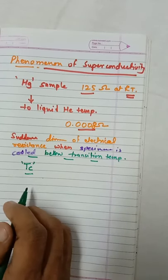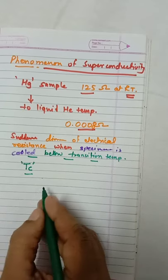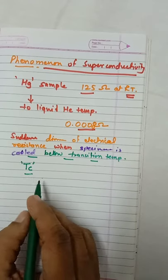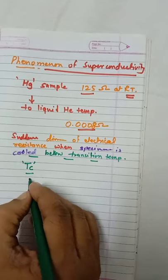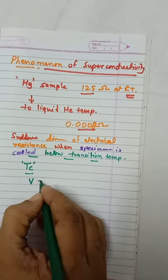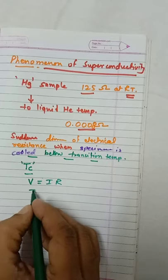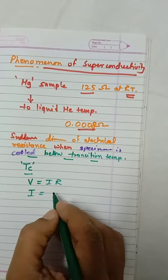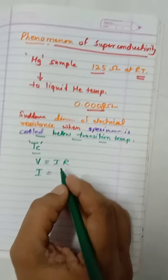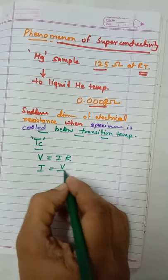Superconductivity therefore makes the resistance vanish. Therefore, referring to Ohm's law equation V equal to I R, the magnitude of current flowing through the specimen, which is given by equation I is equal to V upon R.